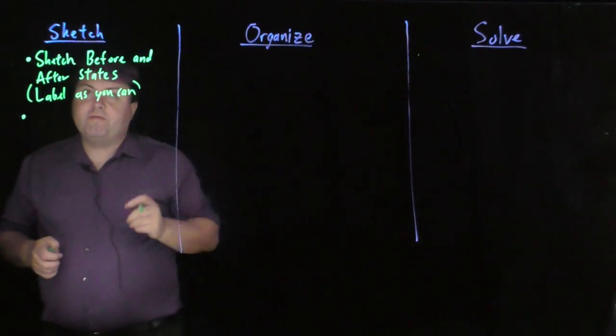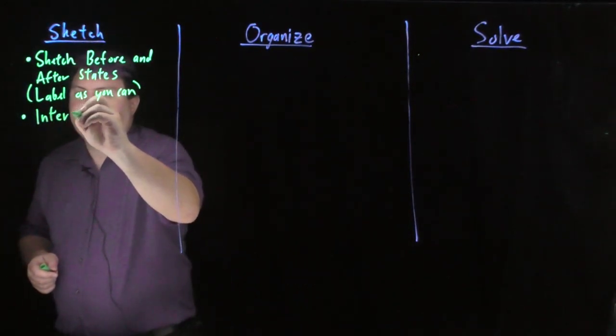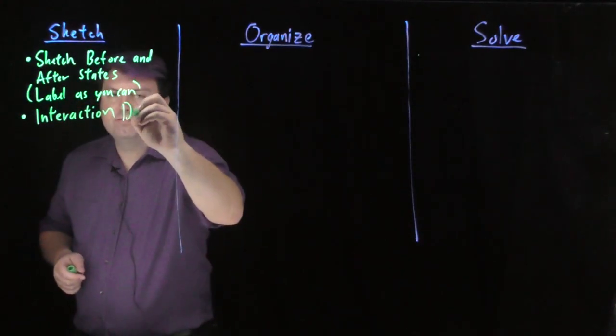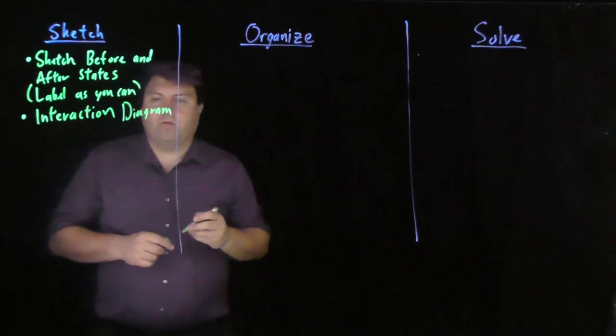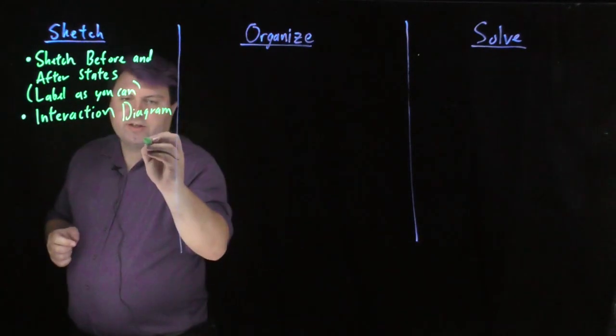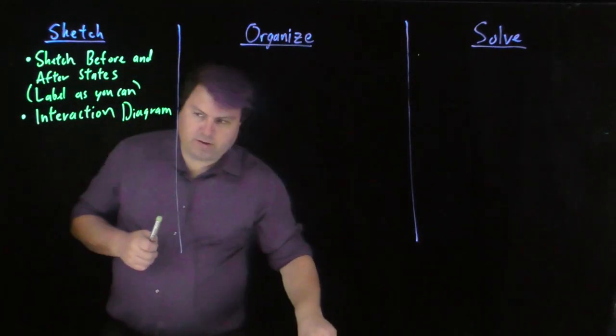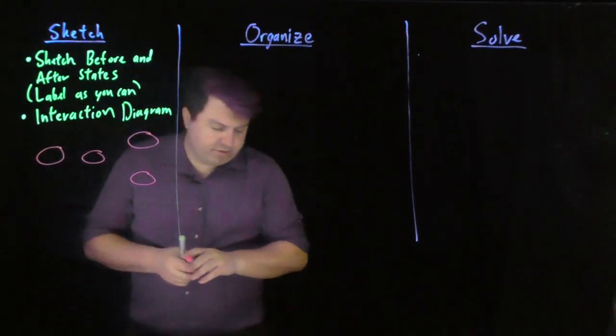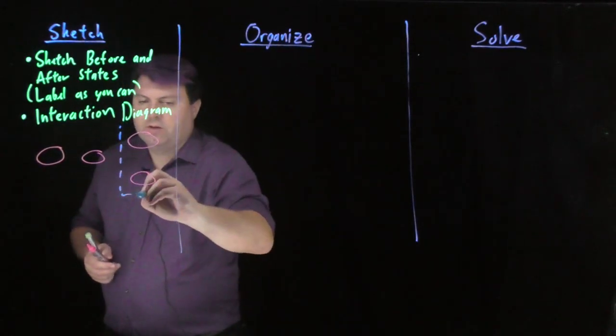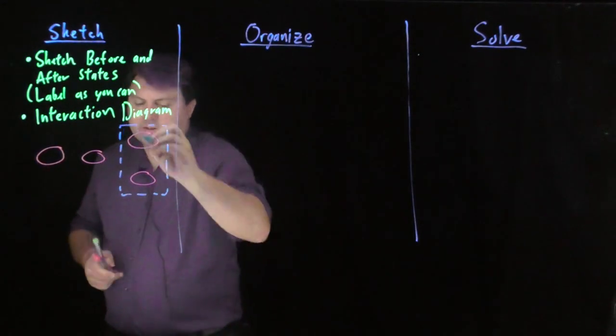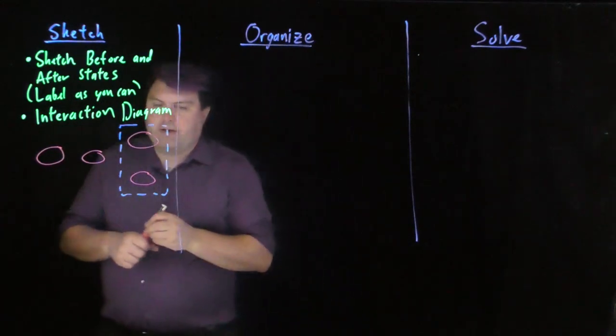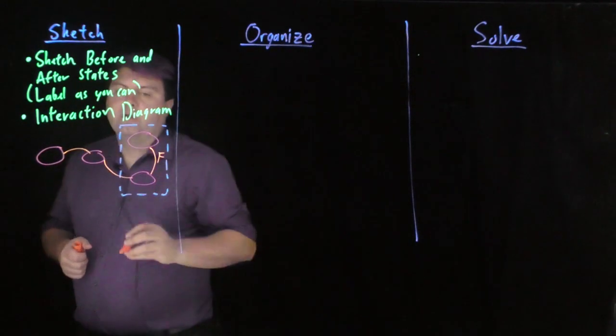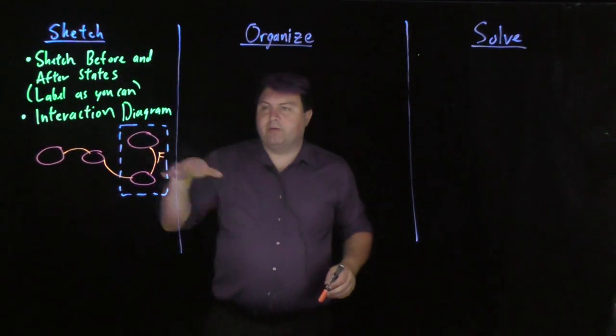Once we've finished this sketch, we want to draw an interaction diagram. We'll draw a sample interaction diagram right here. We're going to have a couple of objects, and we will define a system around one or more of the objects.